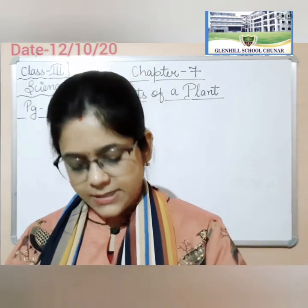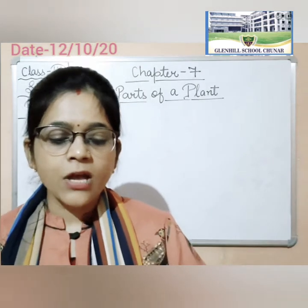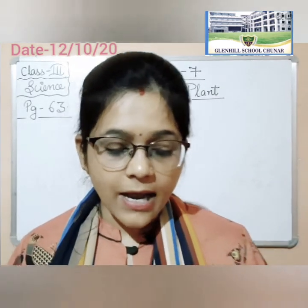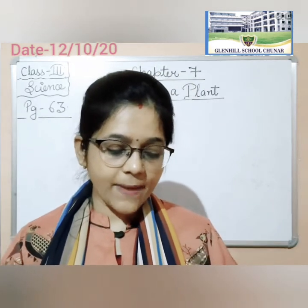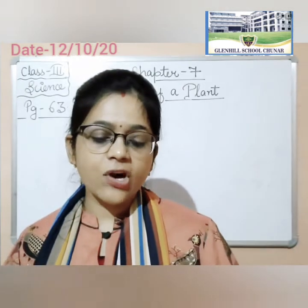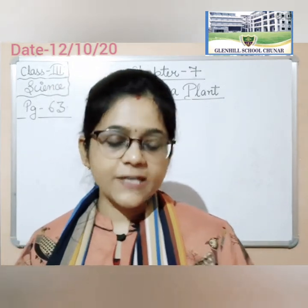Okay students, now come to page number 64. Now Parts of a Plant. Plants have different parts to do different work. If you observe a plant you will see that it has two main parts — one growing above the soil and the other growing below the soil. The part that grows above the soil is called the stem or shoot, and the part that grows below the soil is called the root. The stem or shoot bears branches, buds, flowers and fruits. Each part of the plant carries a specific function.